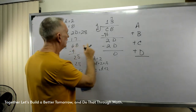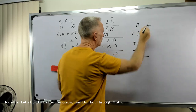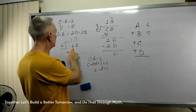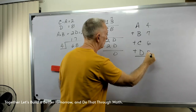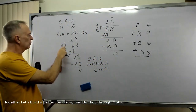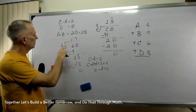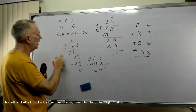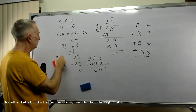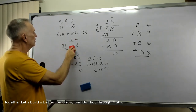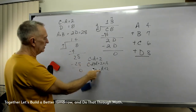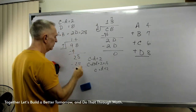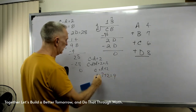So we have A is 4, B is 7, C is 6, and D is 8. But couldn't we swap 7 and 4? What if A is 7 and B is 4? Well, C still equals A plus 2. If A is 7, then C is now 9, because 7 plus 2 equals 9.